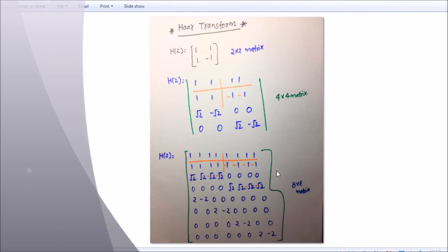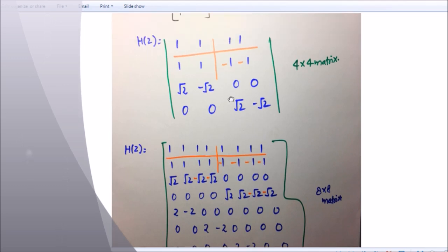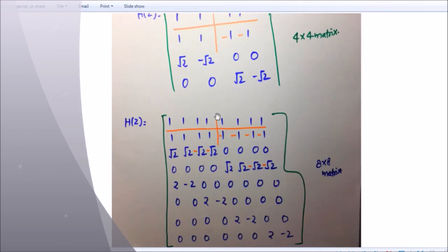Now suppose if you have an 8 into 8 matrix, then what you have to do - write the first four terms twice. After writing, divide like this, same as 4 into 4. This is minus, all this is minus, and this one: root 2, root 2, minus root 2. From here you have to make stairs: 2, minus 2, remaining all zero; zero, zero, 2, minus 2, remaining all zero; zero, zero, zero, 2, minus 2. This is your 8 into 8 matrix.